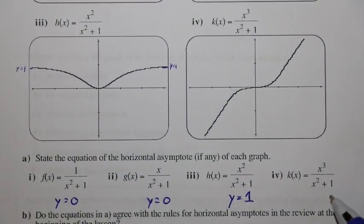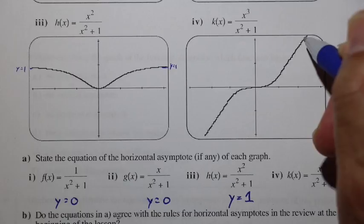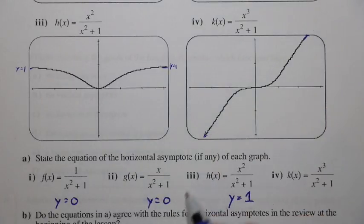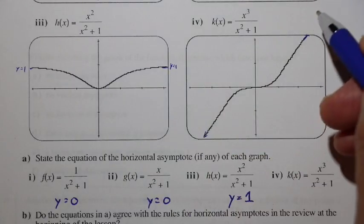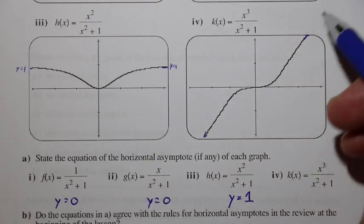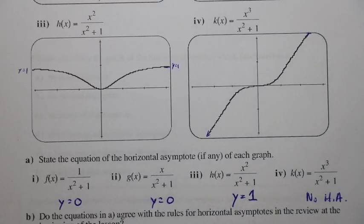For the function x³/(x² + 1), the end behavior in both directions tends toward an oblique slanted line rather than a horizontal line. So there is no horizontal asymptote for this function. If you take calculus later, you'll learn about other types of asymptotes, but for now we can confirm there's no horizontal asymptote.